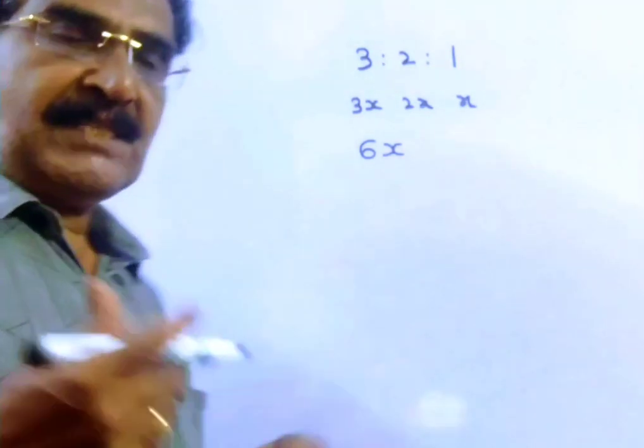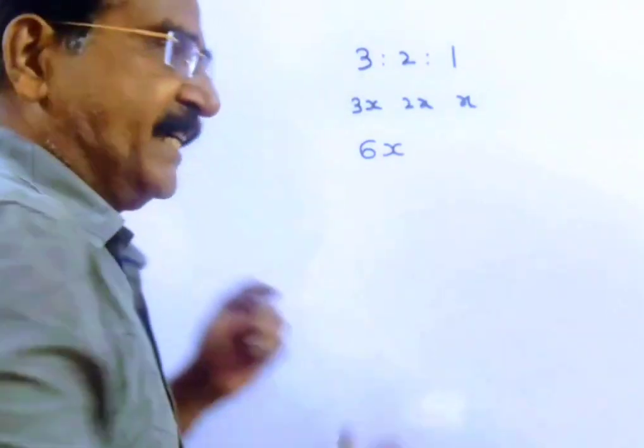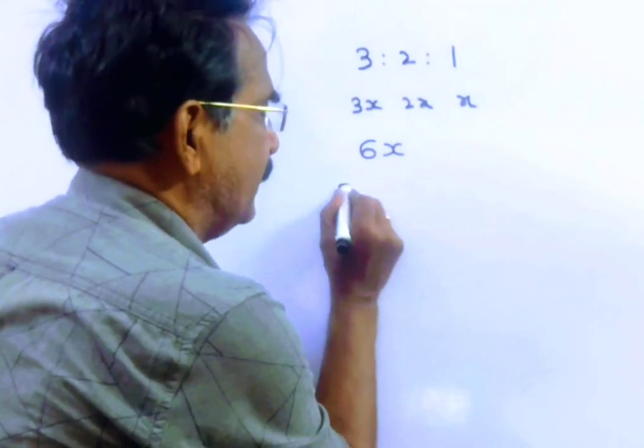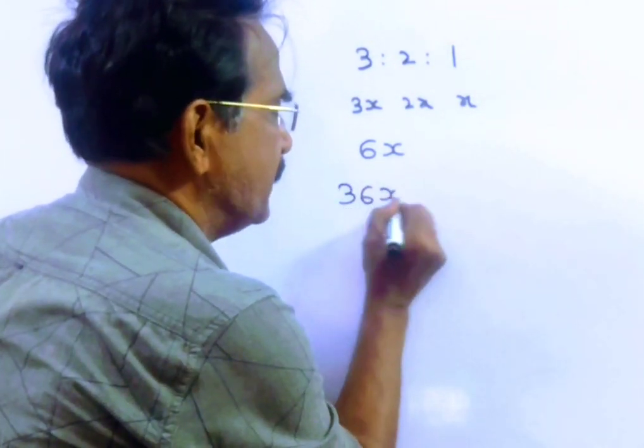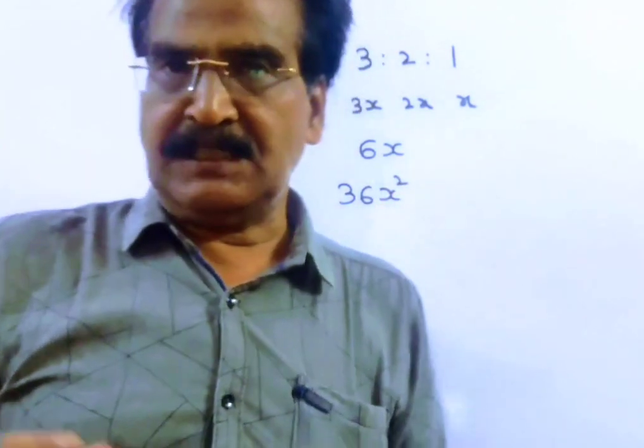So the price of the diamond before it was cut is 6x whole square, which equals 36x whole square.